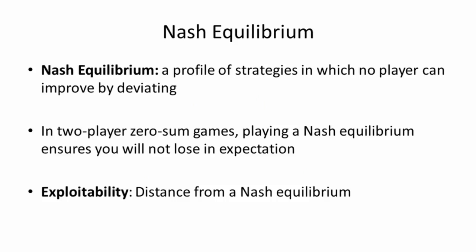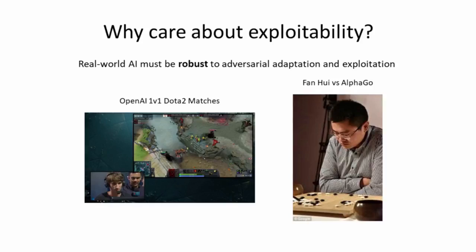Now, when it comes to these games, what we're trying to do is find what's called the Nash Equilibrium. This is a profile of strategies, one for each player, where no player can improve by shifting to a different strategy. And in two-player zero-sum games in particular, this is extremely useful because if you're playing the Nash Equilibrium, you are guaranteed to not lose in expectation. And we're going to measure our performance in terms of exploitability. This is basically distance from a Nash Equilibrium.